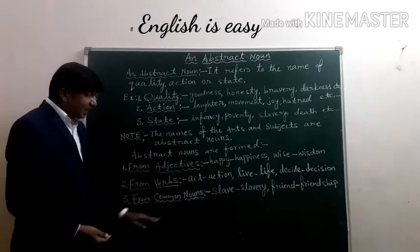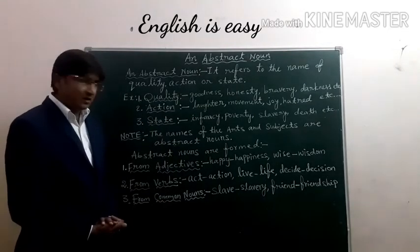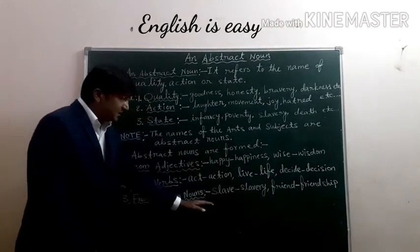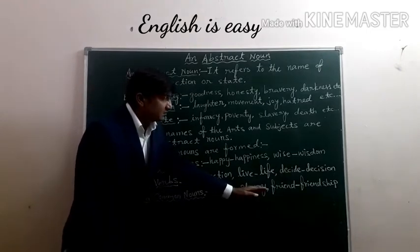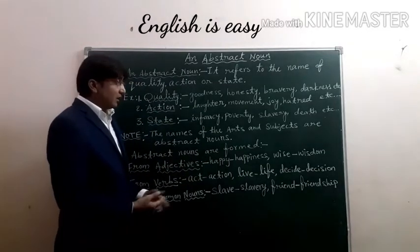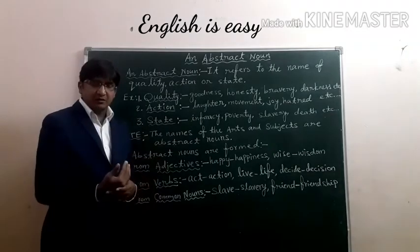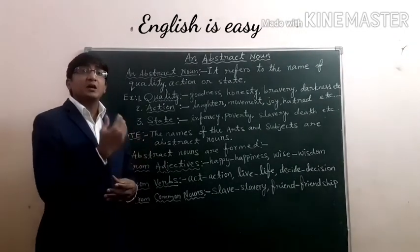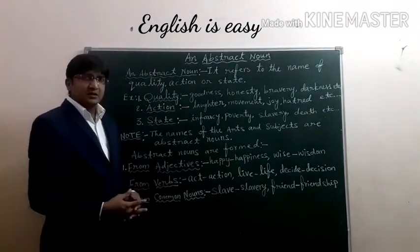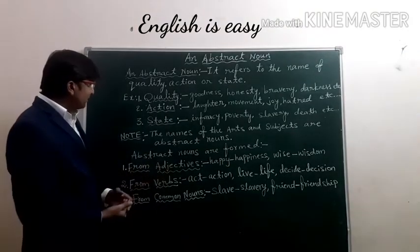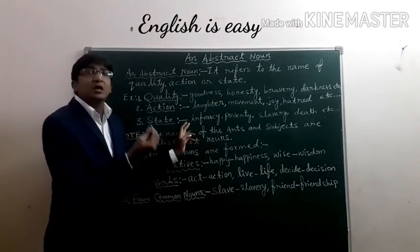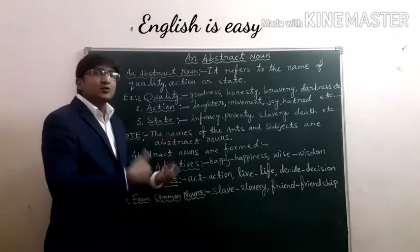Third, from common nouns we can also frame abstract nouns. For example: slave → slavery; slave is a common noun. Friend → friendship. Child is a common noun; we can have childhood. It doesn't matter whether it comes under quality, action, or state — we need to know the noun form and how to use it in a sentence.